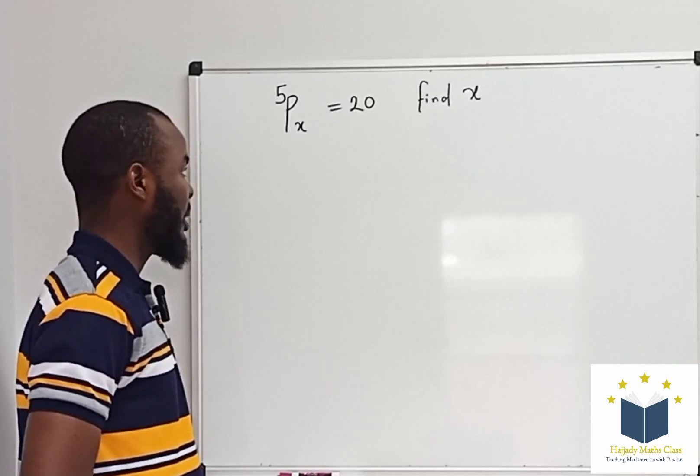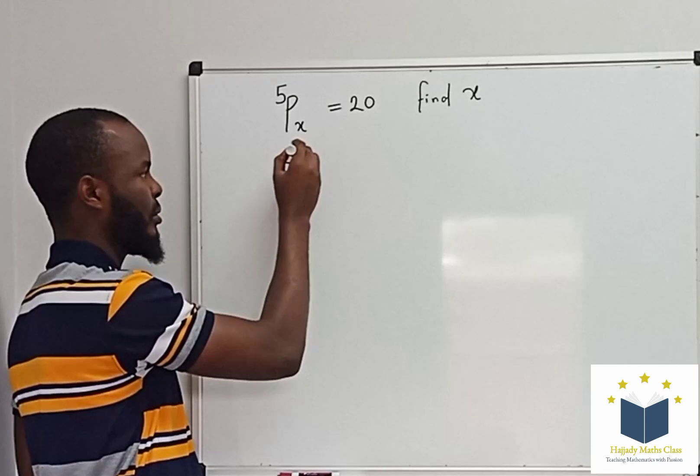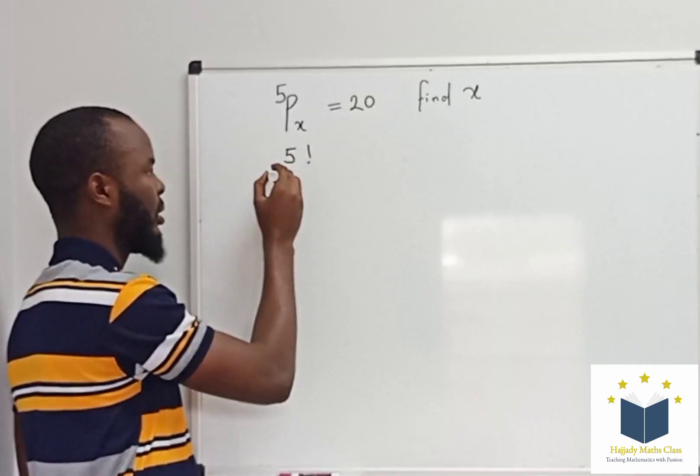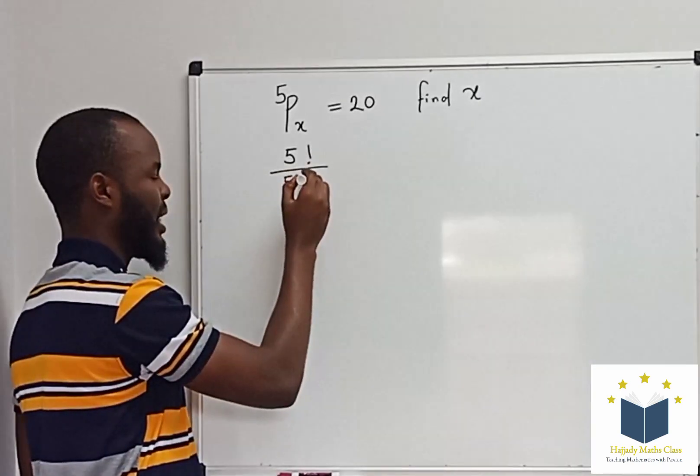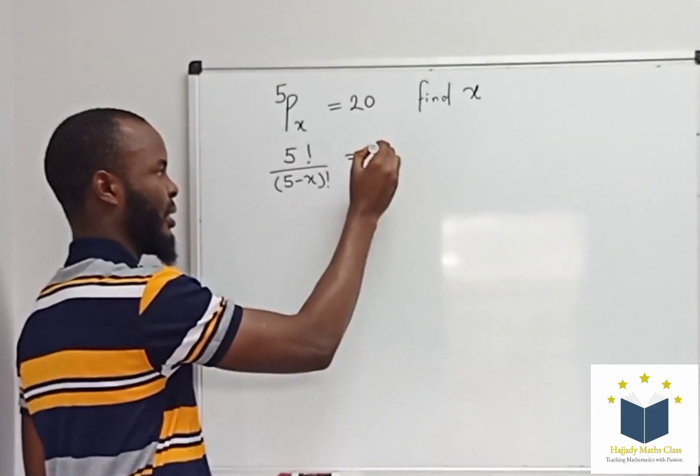Don't forget the rule of permutation says, when you have 5 permutation x, this is the same thing as saying 5 factorial over 5 minus x factorial equals 20.